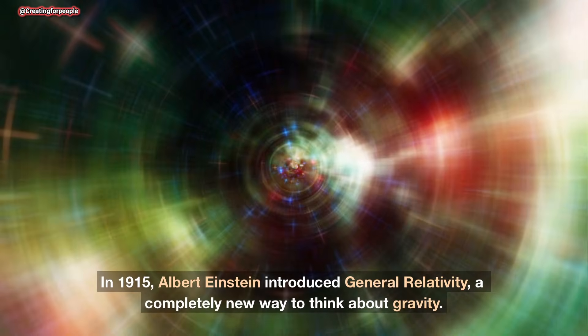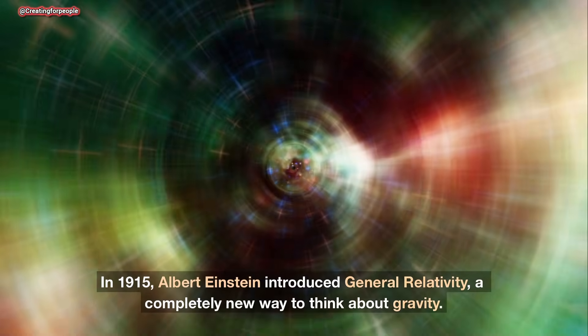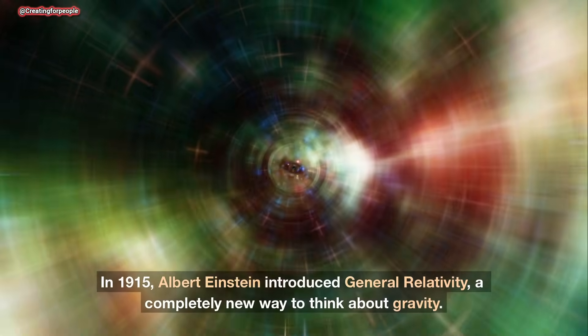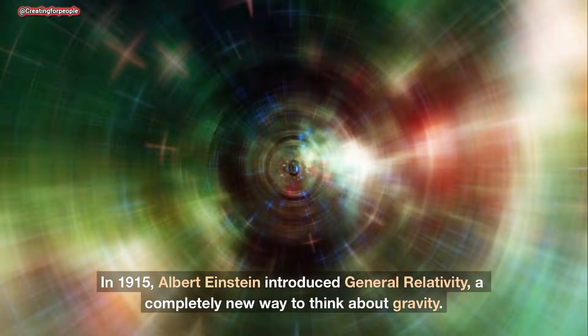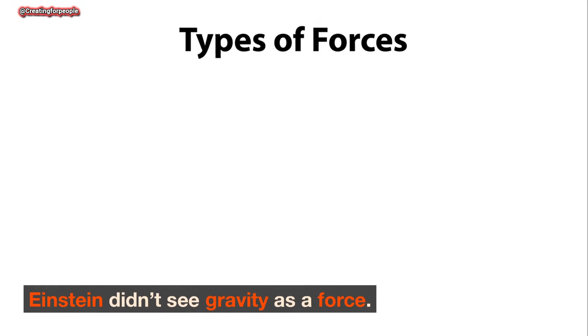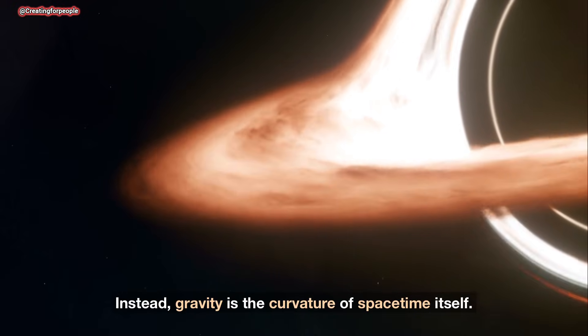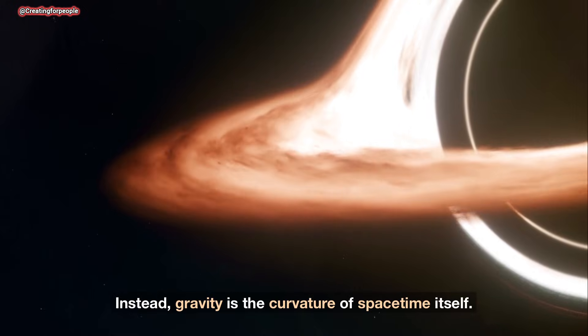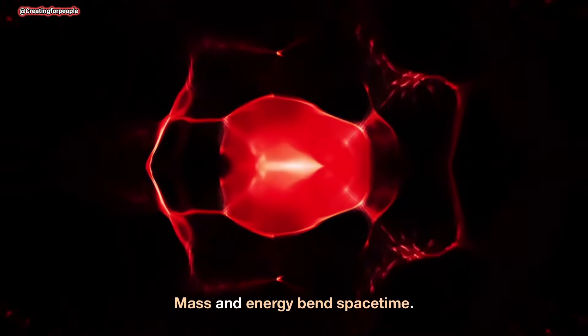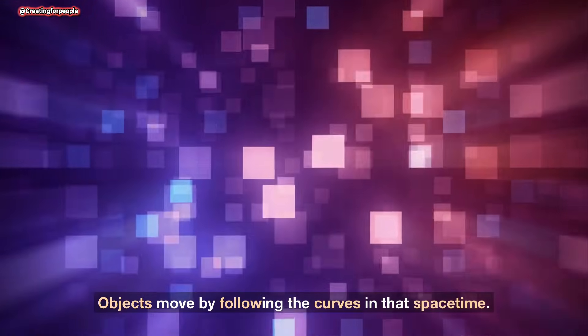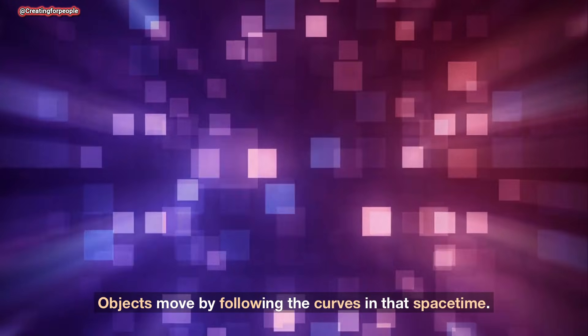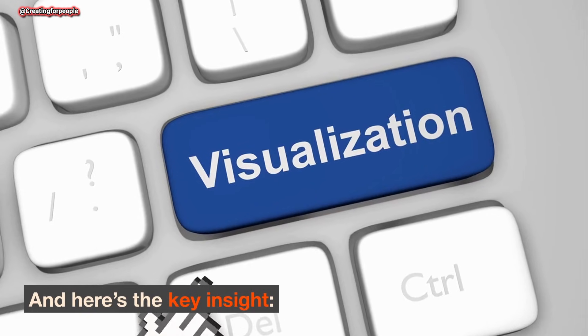In 1915, Albert Einstein introduced general relativity, a completely new way to think about gravity. Einstein didn't see gravity as a force. Instead, gravity is the curvature of space-time itself. Mass and energy bend space-time. Objects move by following the curves in that space-time.